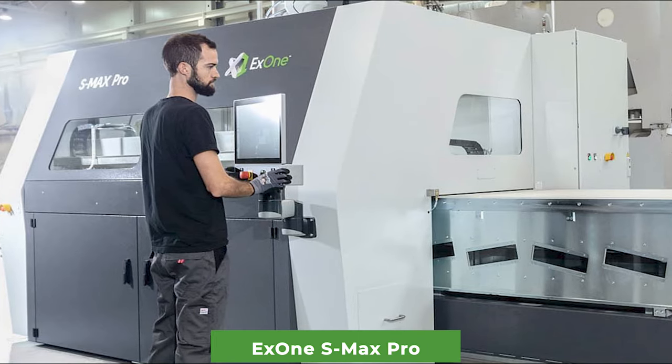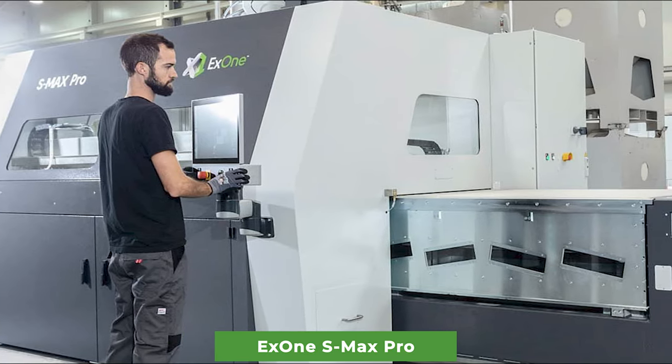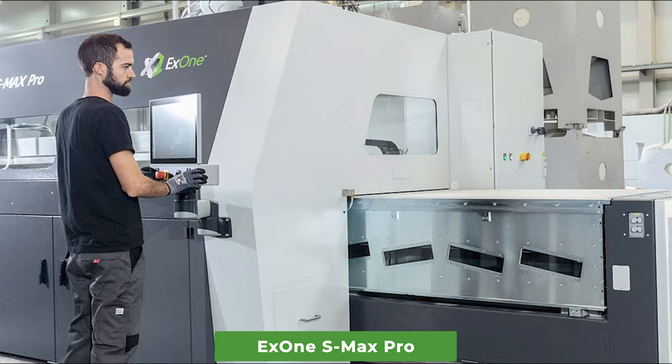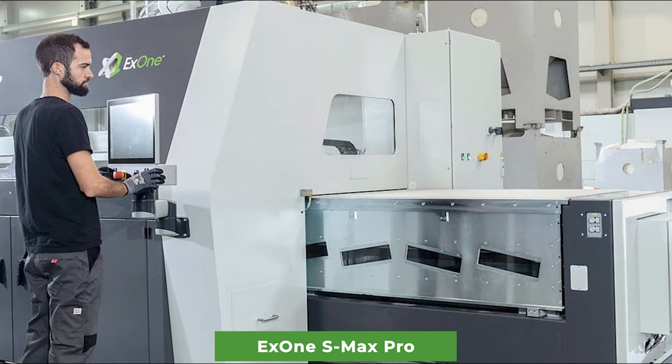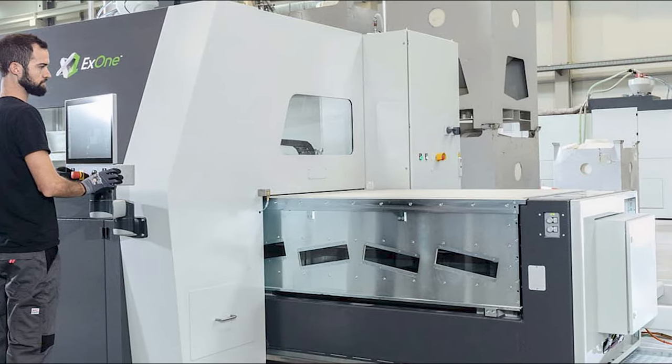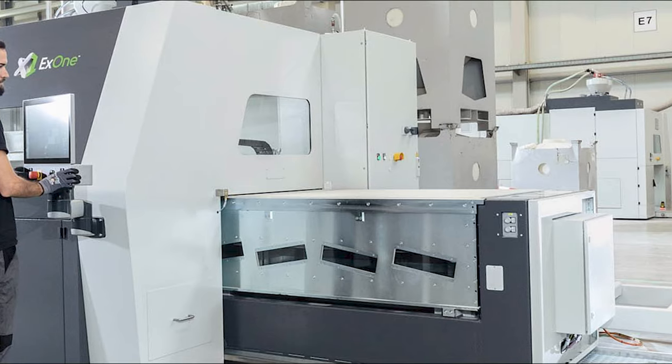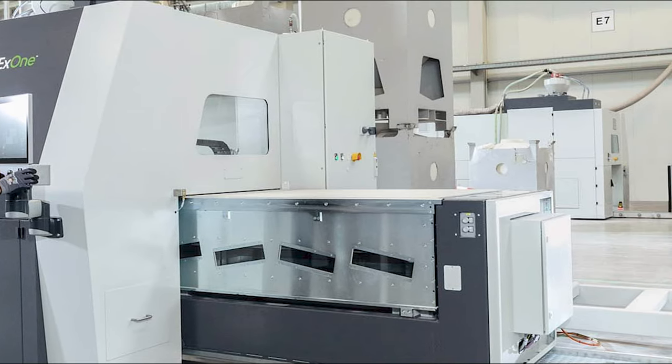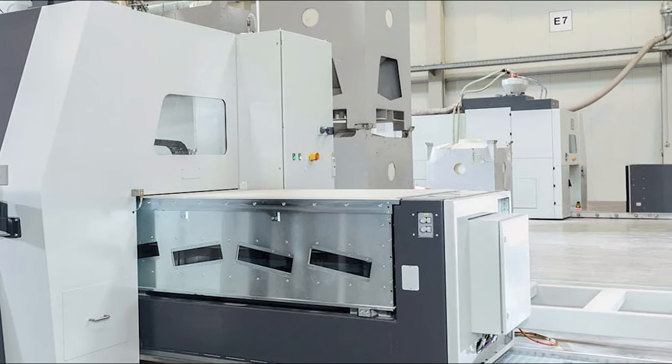The ExOne S-Max Pro prints prototypes or molds from sand with a layer thickness of about 260 microns. This unit has a print chamber that measures 1800 by 1000 by 700 millimeters. The unit also has two chambers that automatically replace each other, each of the chambers has a capacity of 1260 liters.